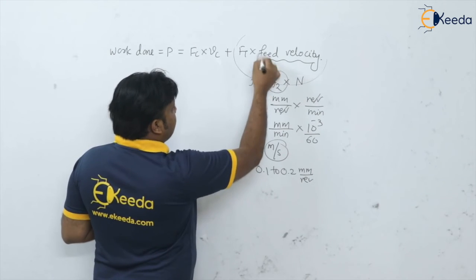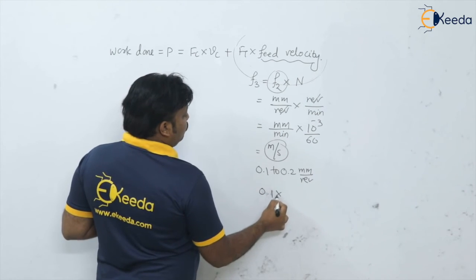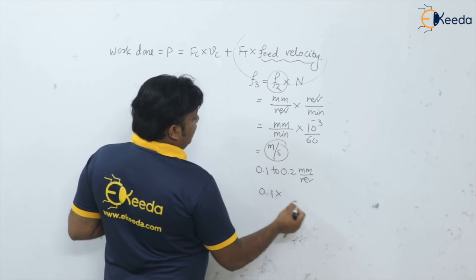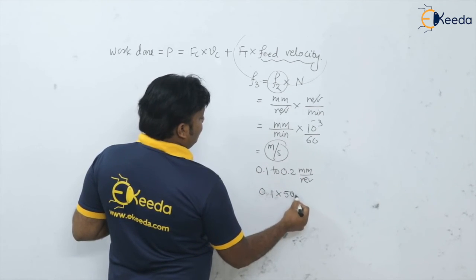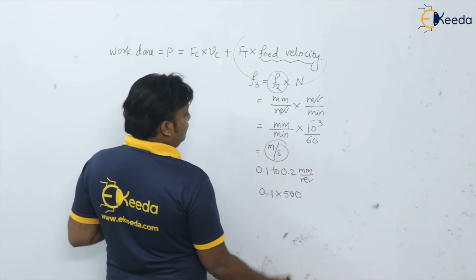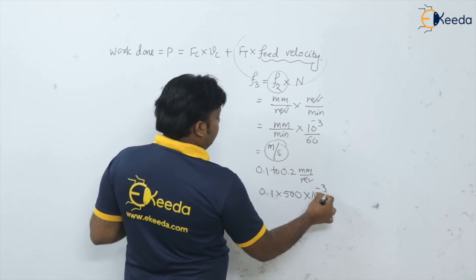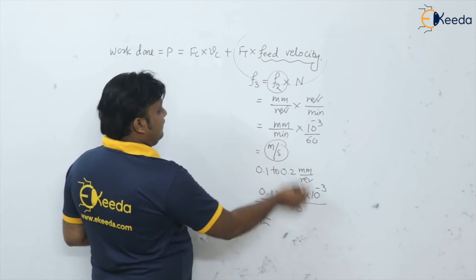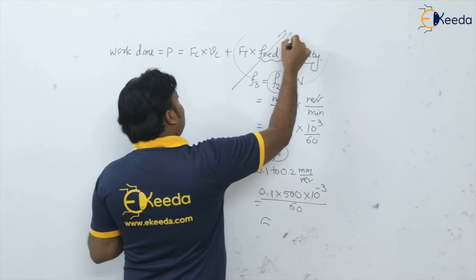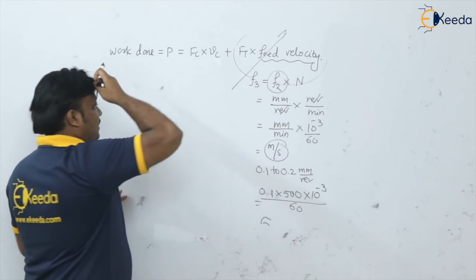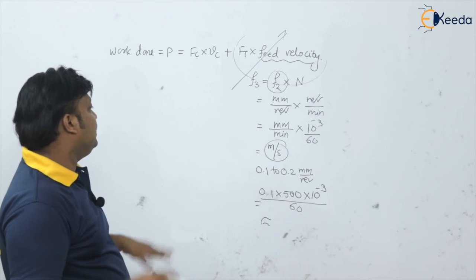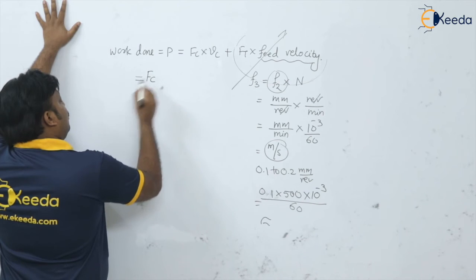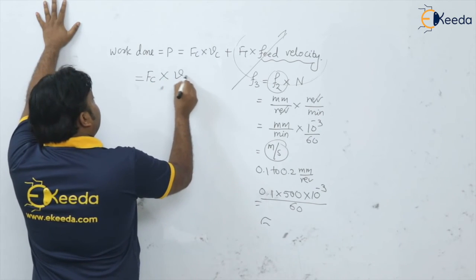For example, if feed is 0.1 mm/rev and spindle speed is 500 RPM, multiplied by 10⁻³ and divided by 60, this value will be very, very small. So we are going to neglect this term, and hence further we say that the power in the machining operation is given only as the product of cutting force into cutting speed.